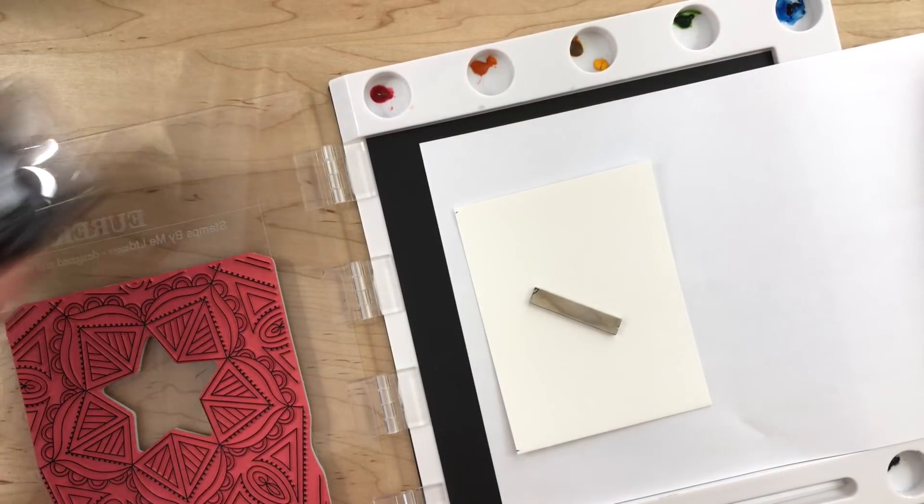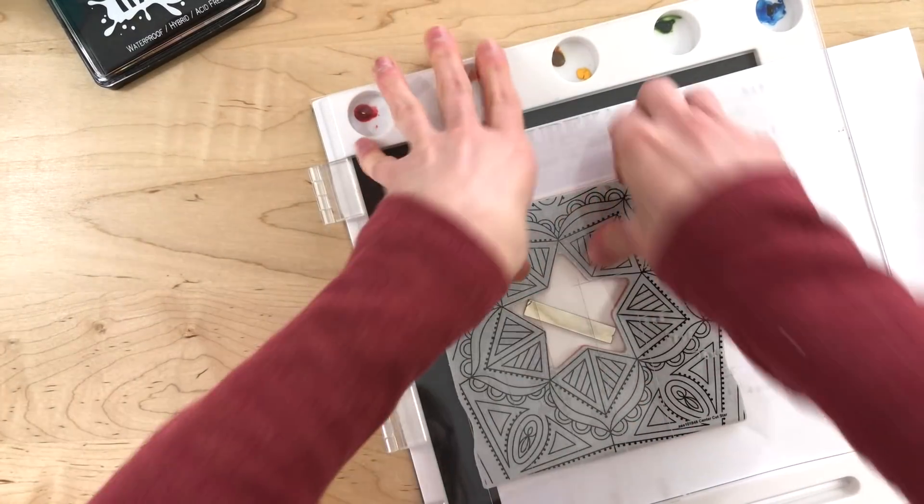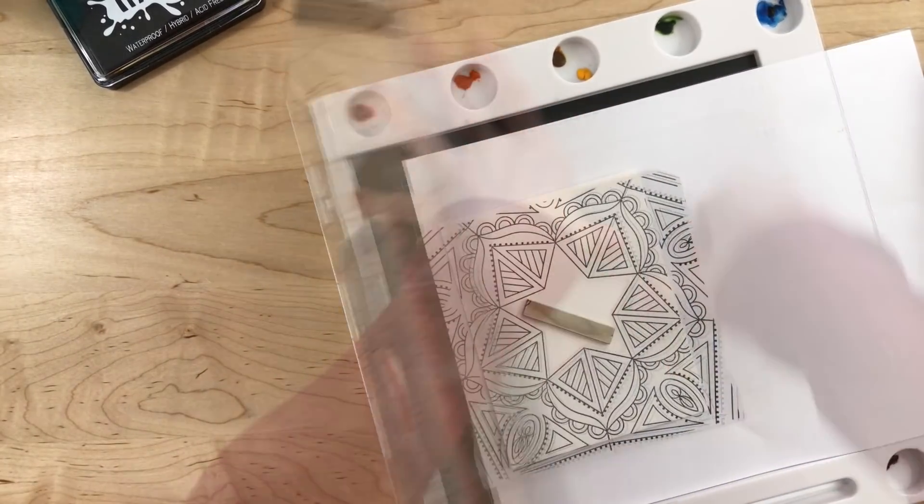And of course, you can also use this stamping platform with cling stamps. Here's a cling stamp here that we have from Simon Says Stamp, and I'm stamping this onto watercolor paper.